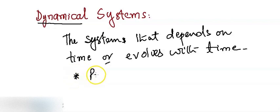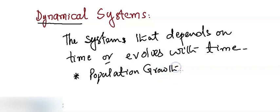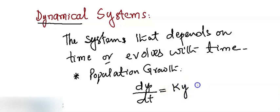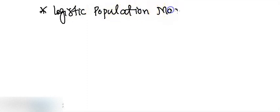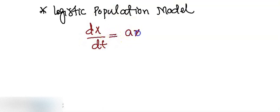Some nice examples that evolve with time: we can talk about population growth. The model is usually given by dy/dt equal to k times y, where y is the population at time t. Similarly, another example could be the logistic population model, given by dx/dt equal to a times x multiplied with 1 minus x over N. This is known as the logistic population model and also evolves with time.